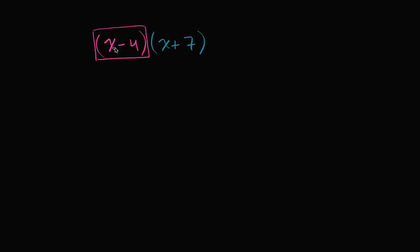We can distribute the entire binomial. We can multiply the x minus four times the x, and we can multiply it times the seven. So let me rewrite this. So we can rewrite this as, if we distribute it, it would be x minus four times this x, times that blue x, and then plus,